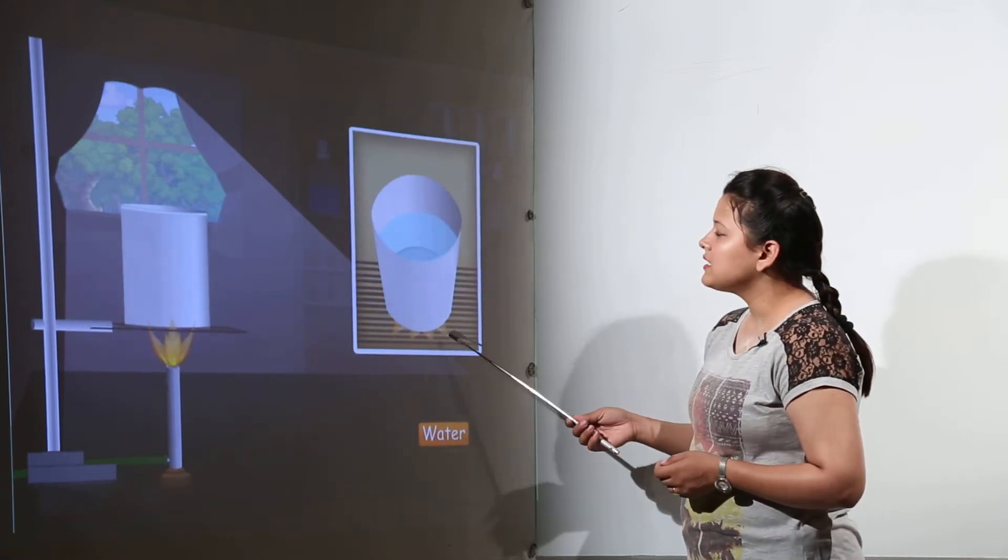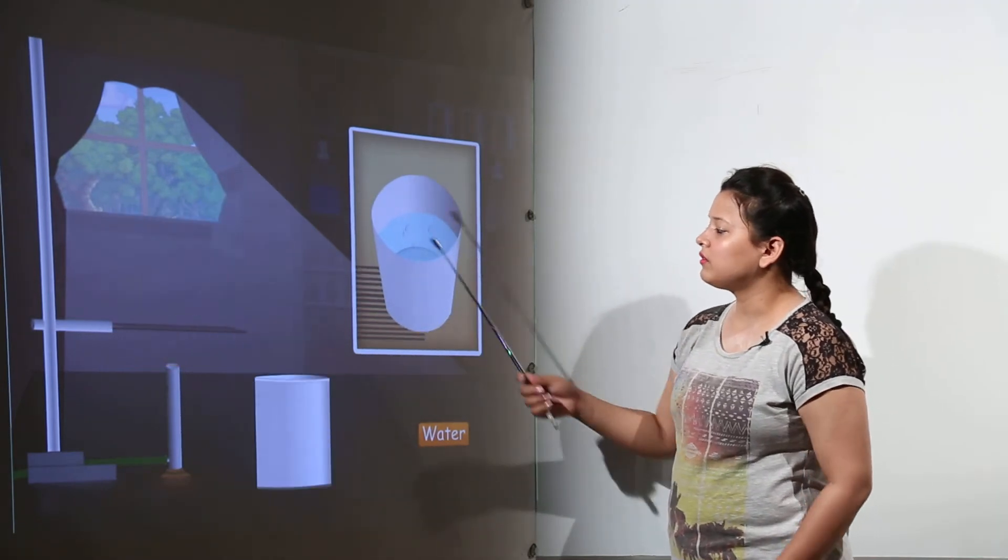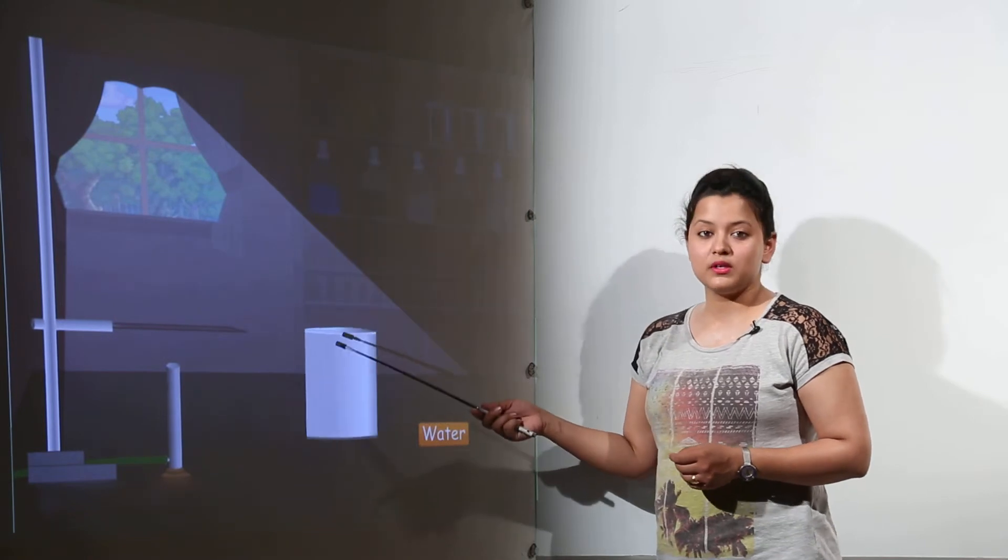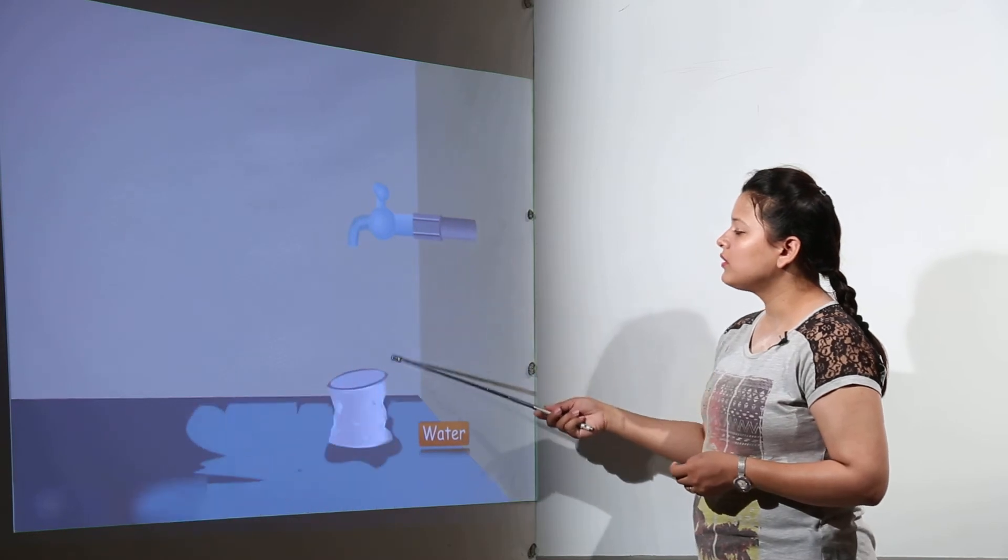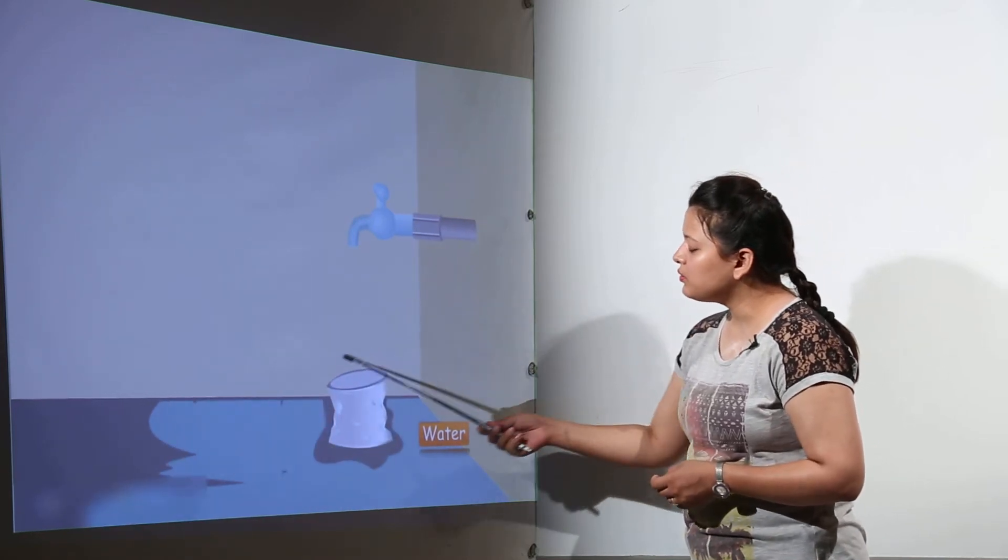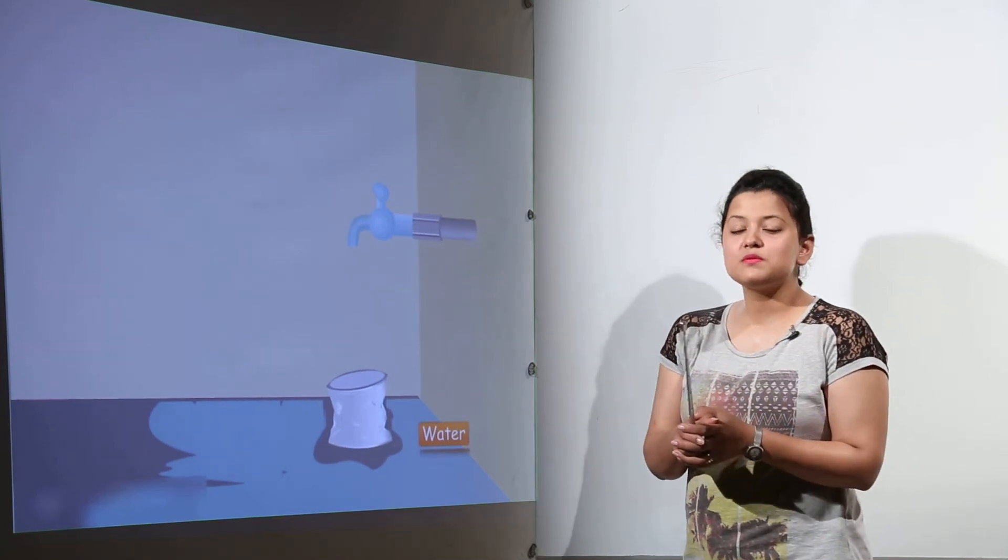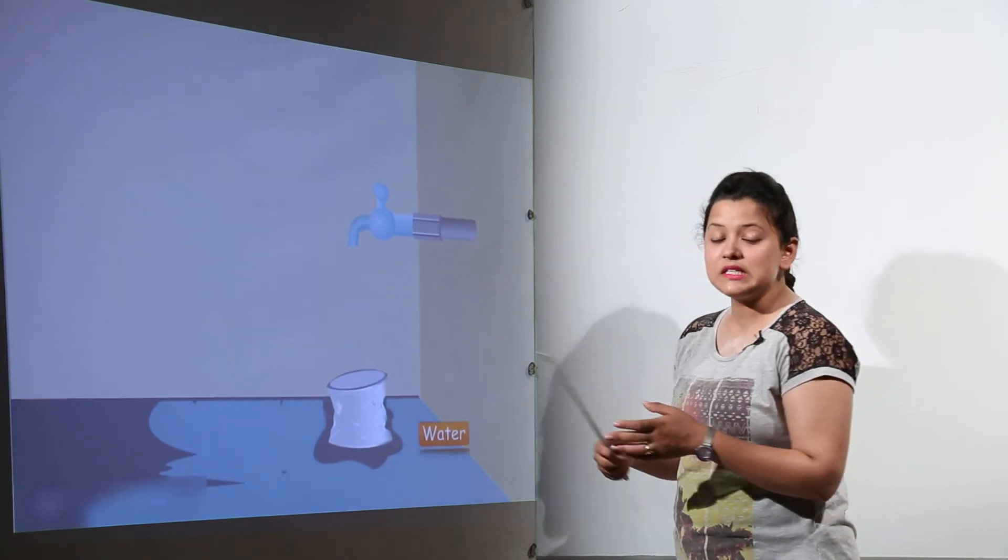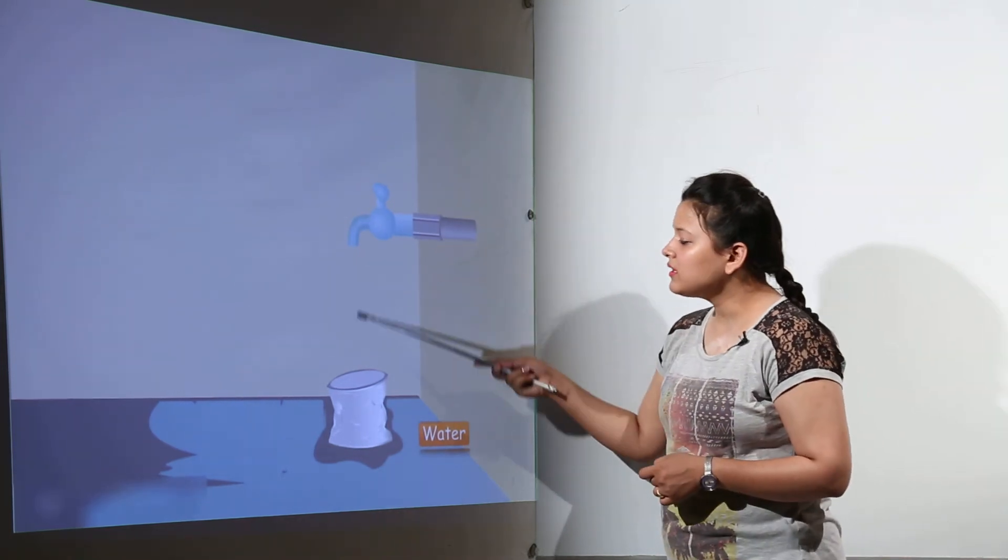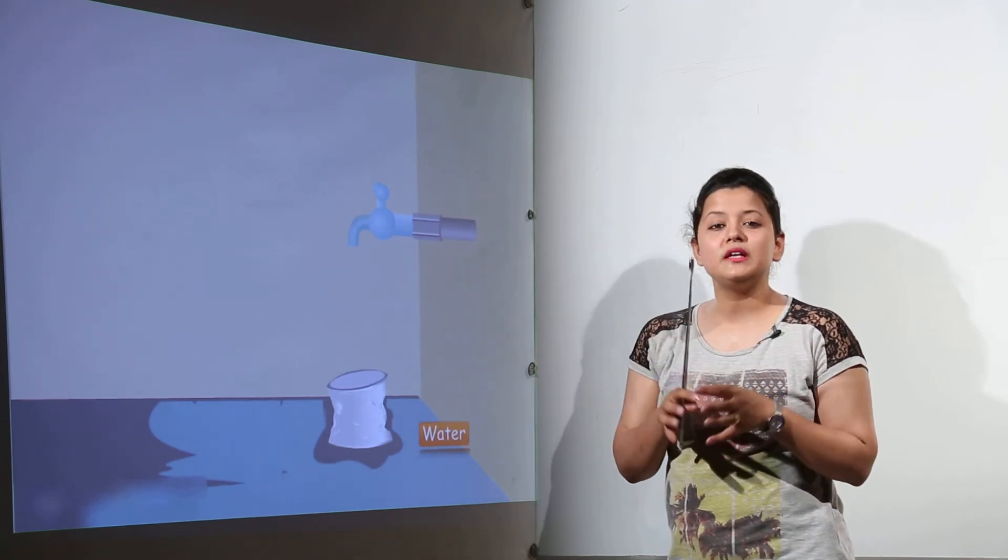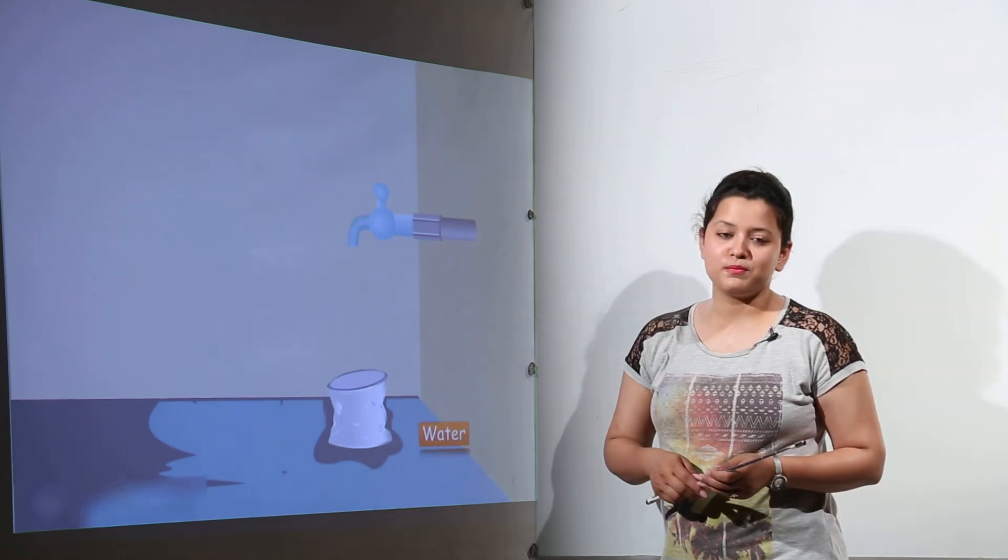Now we shall see another experiment where we take a container and boil some water. When we boil the water, it converts into water vapor. We cover it with a lid and switch on the tap. Immediately you notice that the can changes its shape and shrinks. This is because air present inside kept the container in the same shape, but when water came down onto it, the water vapors condensed, causing the tin can to change its shape.